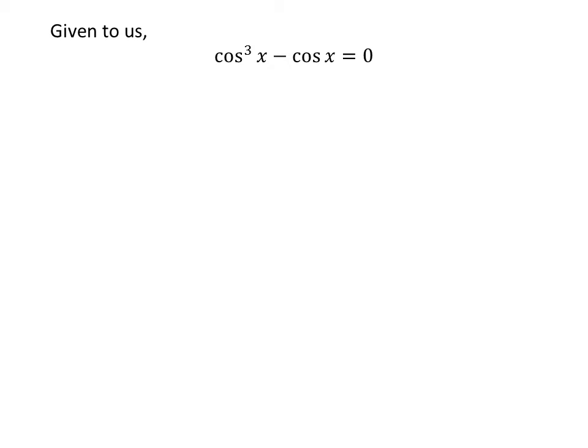Given to us, cos³x - cos x = 0. Taking out the common factor cos x gives us cos x(cos²x - 1) = 0.